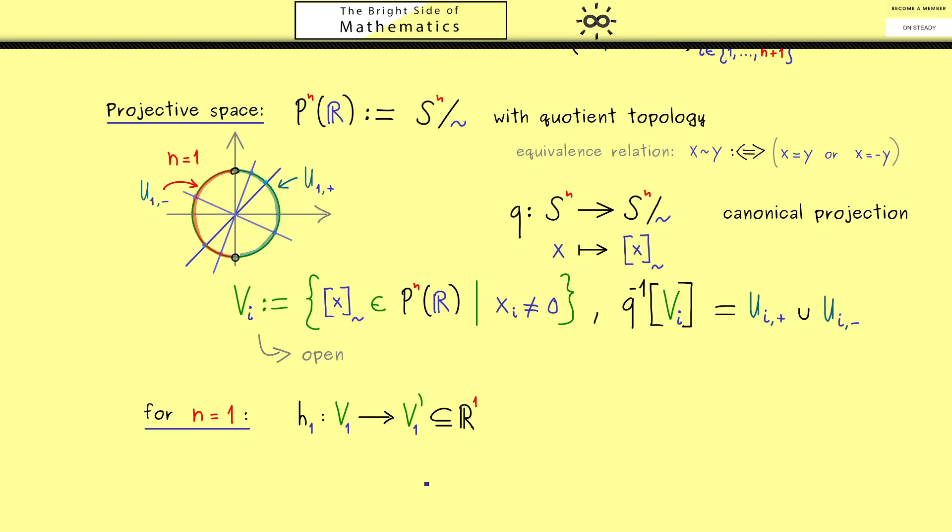Then the question for us here is how can we define h_1 such that we get a continuous map. And maybe you already have a good idea when you look at the lines in the plane here. Obviously you know they have a well-defined slope. And moreover, a given slope uniquely determines a line. Hence working with the slope seems to be a very good idea.